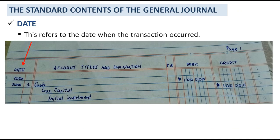The standard contents of the general journal start with the date. This refers to the date when the transaction occurred. So in this example, our date here is June 1, 2020, meaning that the transaction occurred or happened on June 1, 2020.